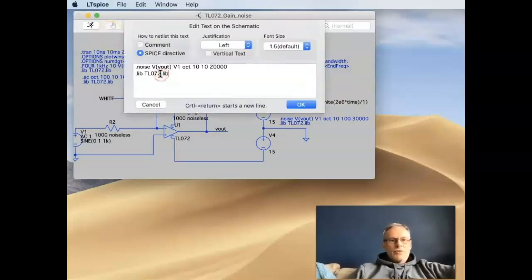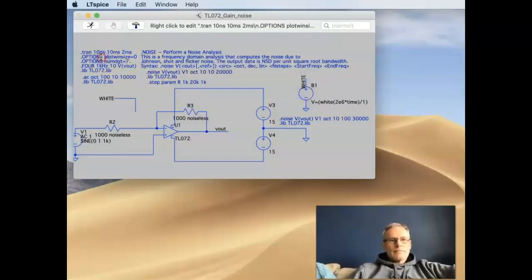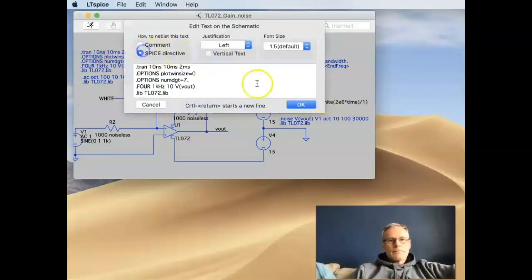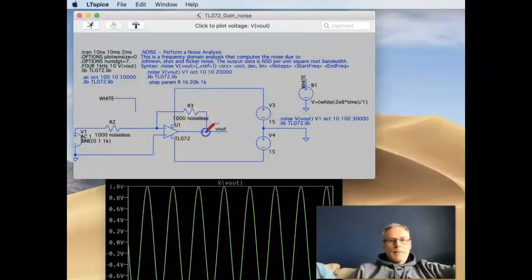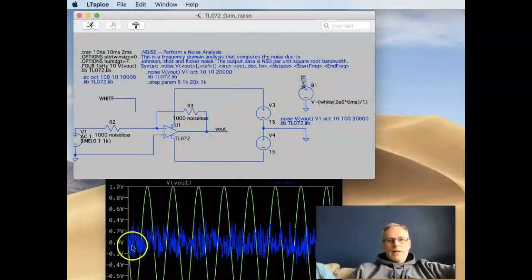If I go back to the transient analysis, and I run this, see our standard signal. If I click on the white here, that's our white noise source. And you can see it's about one volt peak-to-peak. What I can do is I can inject noise into this, any point I like.